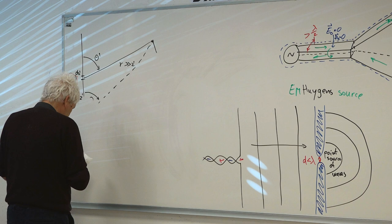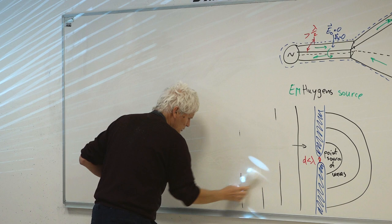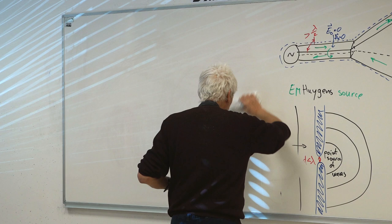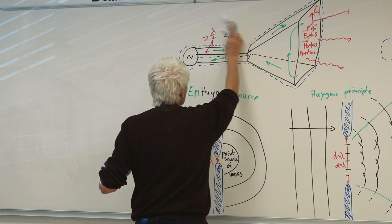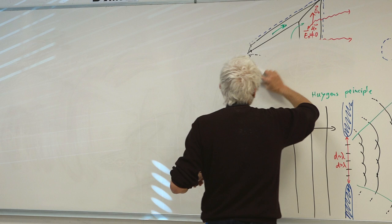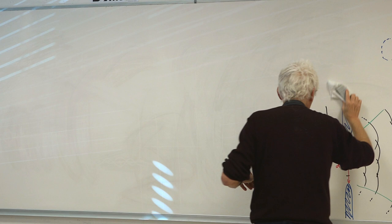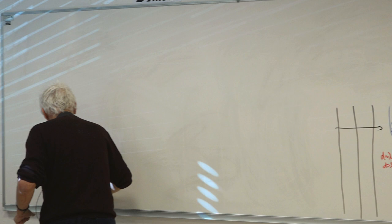The board is difficult to erase, especially the black. I need to define a coordinate system for this surface to see the various quantities that play a role in the problem. I'll orient the coordinate system so that the incident wave comes from the minus-z direction, with axes x, y, and z.